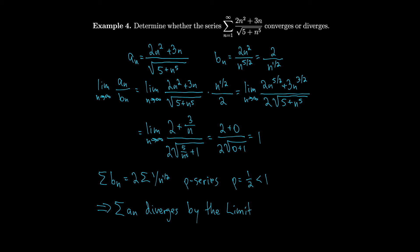Notice that when choosing the series for comparison, you want to just try to look at the dominant terms and ignore all the other stuff getting in the way — we just looked at 2n² and n^(5/2).